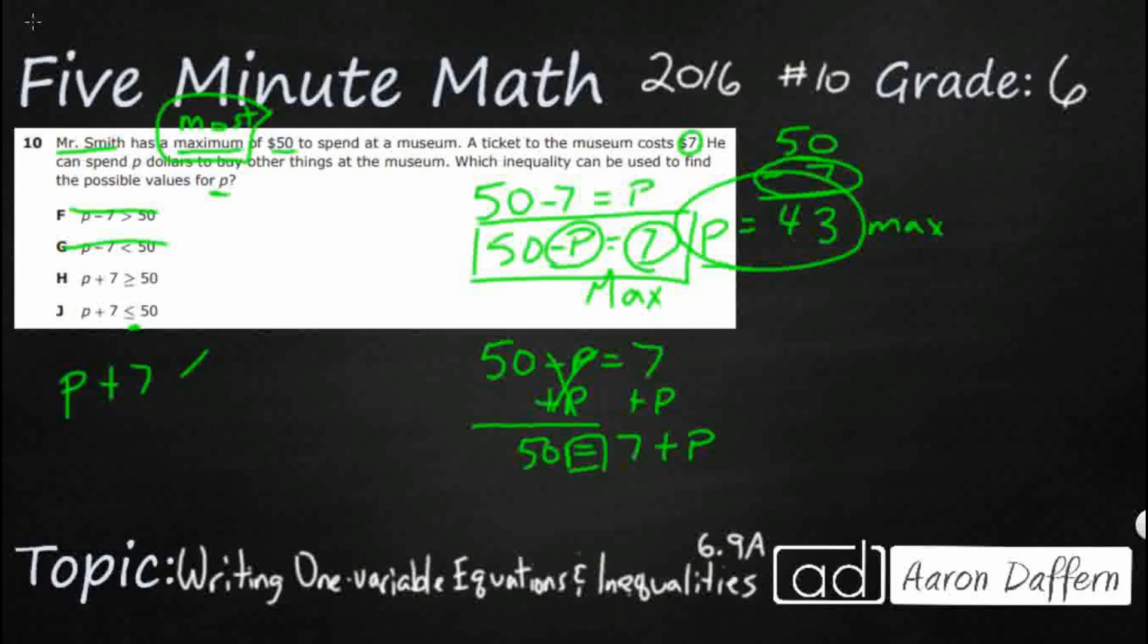This says P plus 7 and J. I'll write less than or equal to 50. So you can be less than 50. You can be equal to 50. You just can't be more than 50.